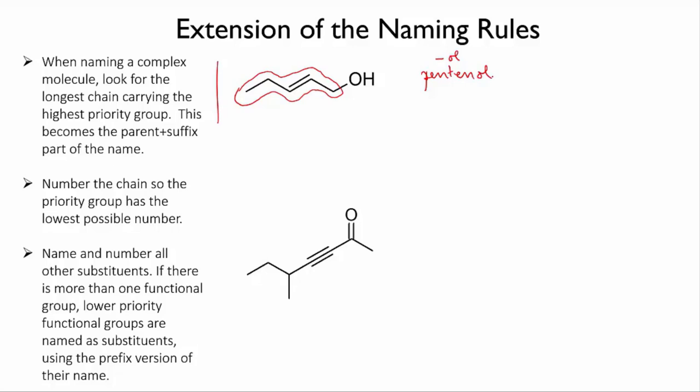However, we need to put in some numbers to say where the OH and the double bond are. So we number from the alcohol end, and that gives us pent-2-ene-1-ol.